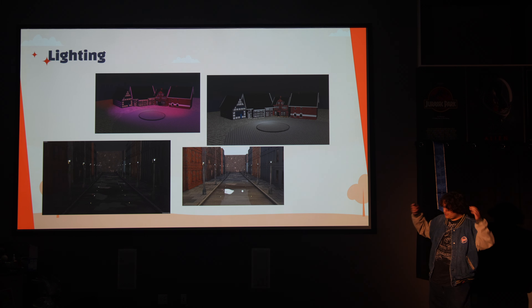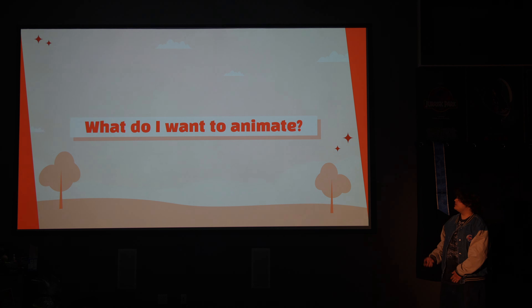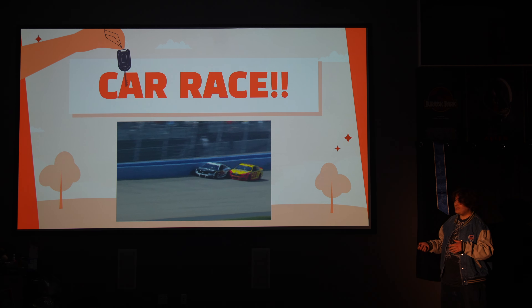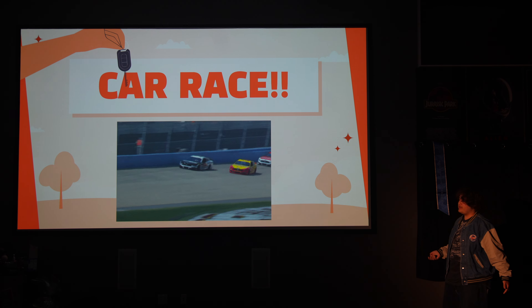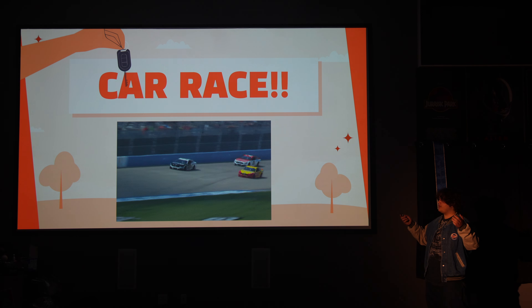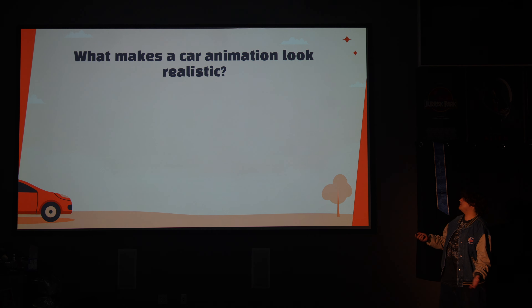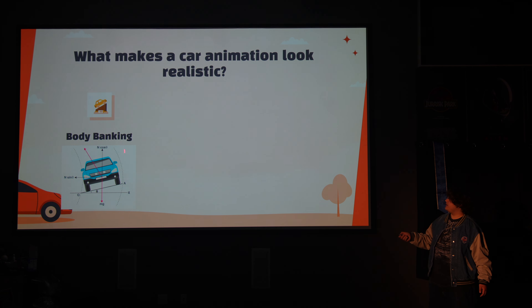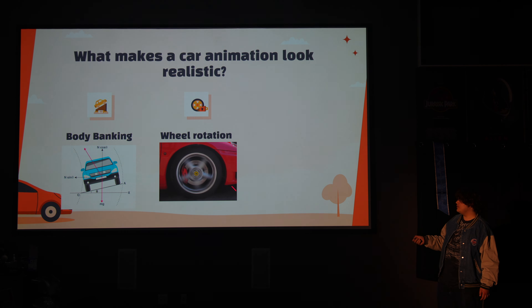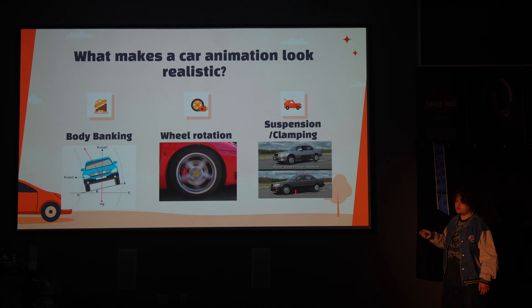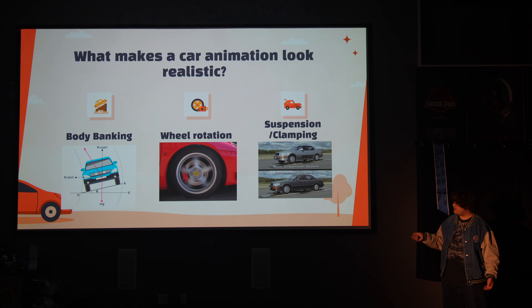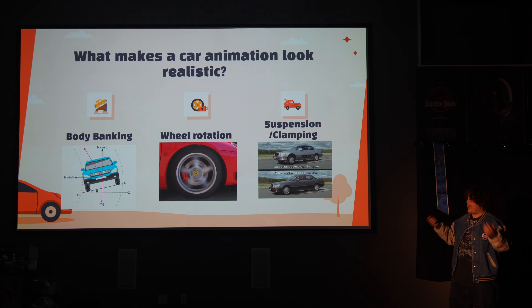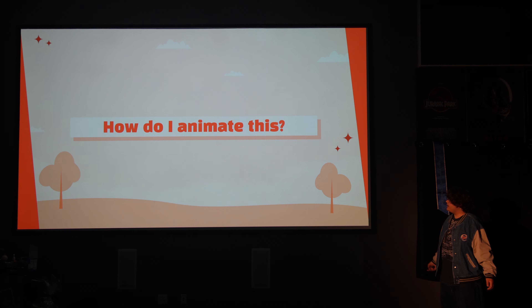Now I've messed around a little bit, and I have to think about what I want to animate. There's so many things I want to do. And what is the coolest thing in the world? A car race. Racing cars are super awesome and really cool. The first step in animating a car — I thought about what are the three most important things that make a car animation look realistic. Physics students, this will look familiar, and I'm sorry to give you PTSD. Body banking is a very big part. The rotation of the wheels as it moves. And then the third one: suspension and clamping of the wheels to the ground. There's a ton of other things, but these are big, big parts.